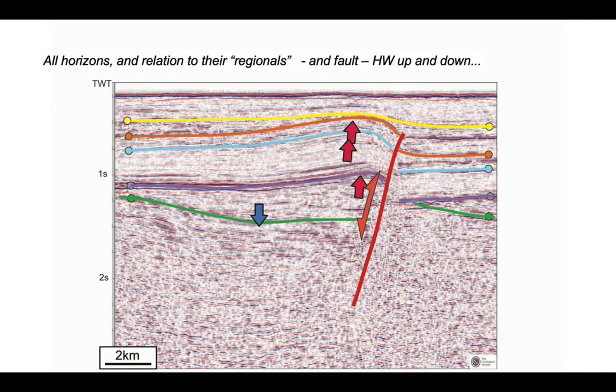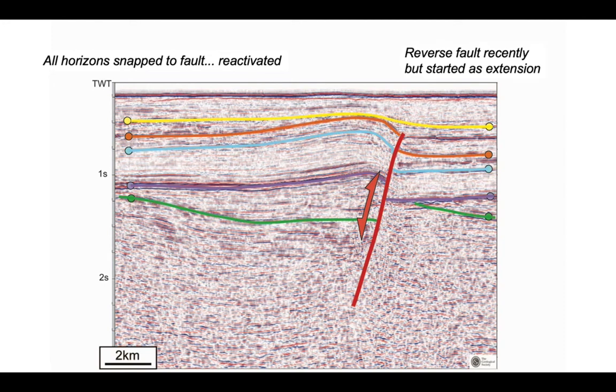So let's just tidy up our interpretation. Snap the horizons to the faults. Snap our horizons to the fault. And just reiterate that this fault acted as a reverse or thrust fault, recently deforming the yellow horizon, but started life as a normal or extensional form.